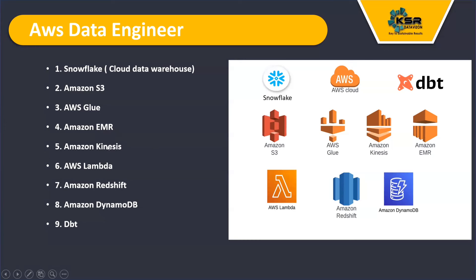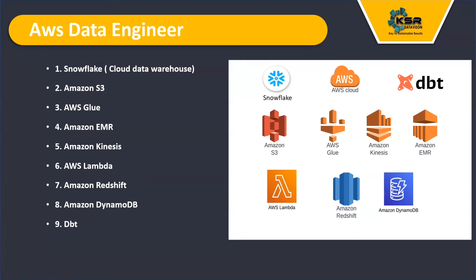Then learn Amazon Kinesis, mainly used for real-time data extraction and streaming data. Next is AWS Lambda, an event-based computing service mainly used to trigger jobs. Then understand Amazon Redshift — a data warehouse used to store and analyze data, specifically supported by AWS. Unlike Snowflake which connects to many services, Redshift is primarily within the AWS ecosystem. You also need to know Amazon DynamoDB, where you mainly store unstructured data.